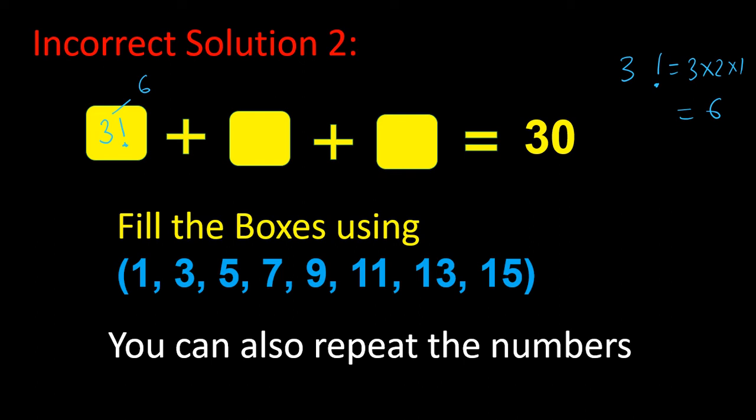So you have 6 here, and then you are left with 24. You can make 24 using different values, maybe 15 and 9, 13 and 11. So write 11, 13, and that gives you 30. But again, sorry to say that factorial is not in the list, so that is possibly a wrong solution that is getting circulated.